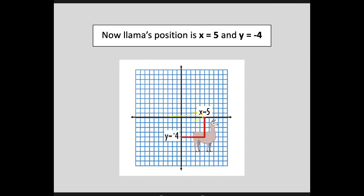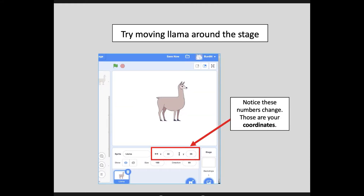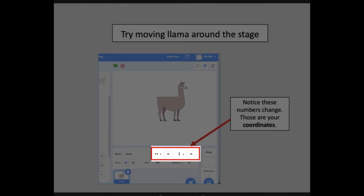Check out Llama now. Count the number of boxes he has moved to the right — five. That means his X coordinate now equals five. Then count how many boxes down he has moved on the Y axis — you should get four. Remember, he moved below the intersection which is zero, so his Y axis now equals negative four. We would say that Llama's position is X equals five and Y equals negative four. You can see exactly which coordinate he is currently placed at by looking at the numbers right below the stage. There are even helpful little arrows to remind you that X moves left and right and Y moves up and down.